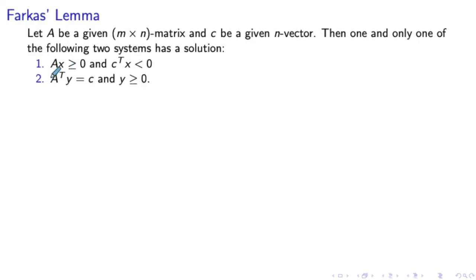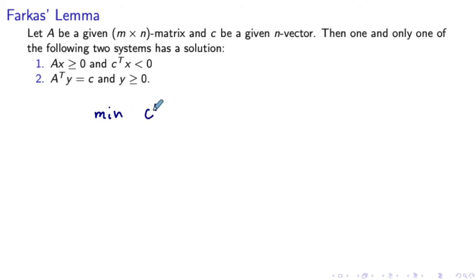We have two systems, and the statement is that exactly one of these two systems will have a solution, no matter which input matrix A and vector C we have. Let's see how we can establish this using duality theory. The first system looks like the objective and constraints of a typical linear program. In the canonical form of an LP, we usually have a minimization problem with greater-than-or-equal-to constraints. So let's write down such a linear program: minimize C transposed x, subject to Ax ≥ 0. In canonical form we usually have non-negativity constraints as well, but we don't have any here.